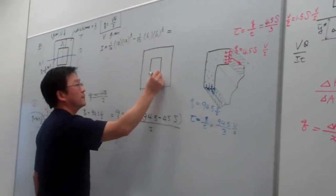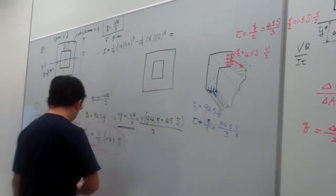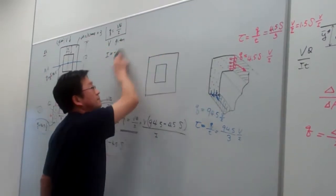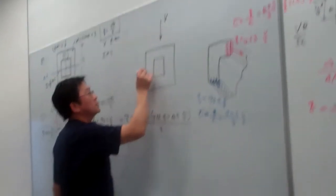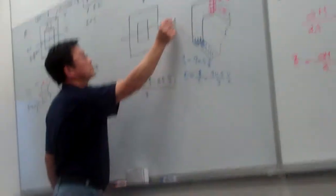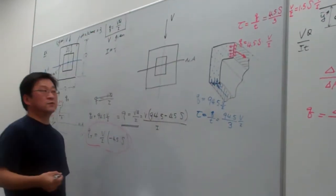Let me redraw this one more time. This is our V we applied here, and this is our neutral axis, and here this is the line of symmetry.